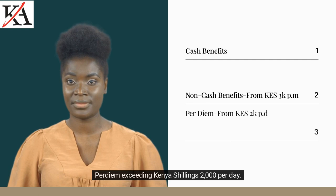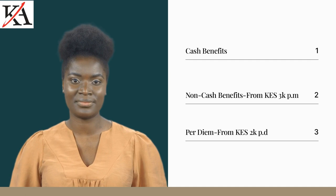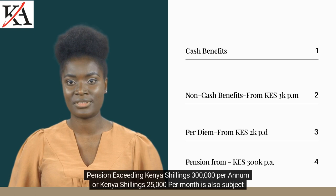Per diem are monies paid to employees working out of their station for sustenance. This may include taxi fees, accommodation costs, food, etc. Pension exceeding Kenya shillings 300,000 per annum or Kenya shillings 25,000 per month is also subject to tax.